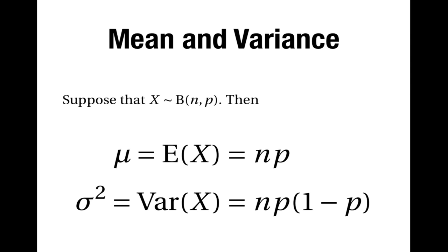Remember that mu equals n times p, and sigma squared, the variance, is equal to np times 1 minus p. Thank you for watching.